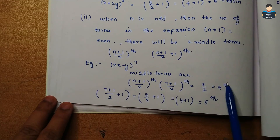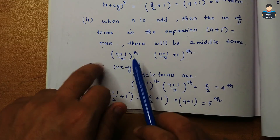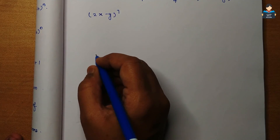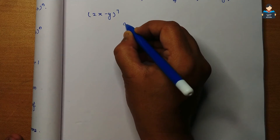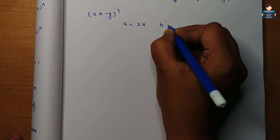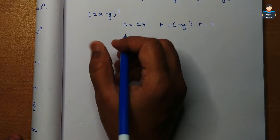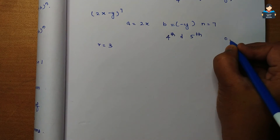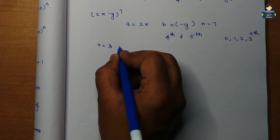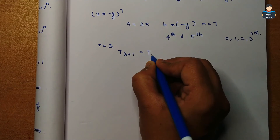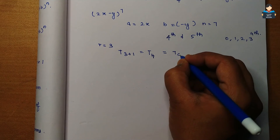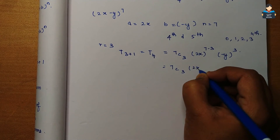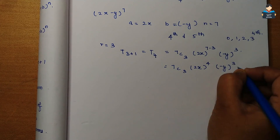We have two middle terms: the 4th and 5th terms, that is (n+1)/2 and (n+1)/2 + 1. For (2x - y)^7, a = 2x, b = -y, n = 7. For the 4th term, r = 3: T4 = 7C3 * (2x)^(7-3) * (-y)^3 = 7C3 * (2x)^4 * (-y)^3.